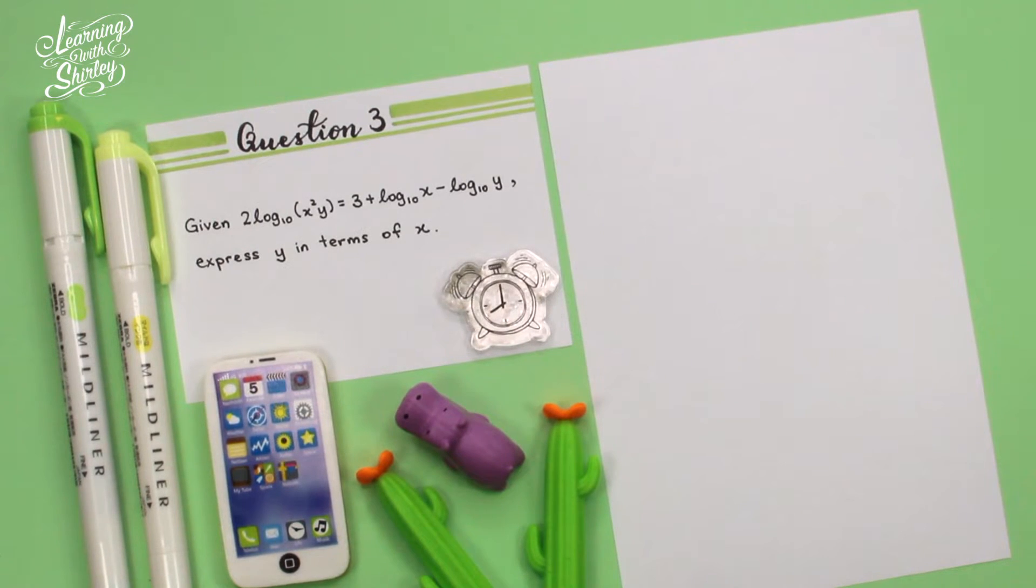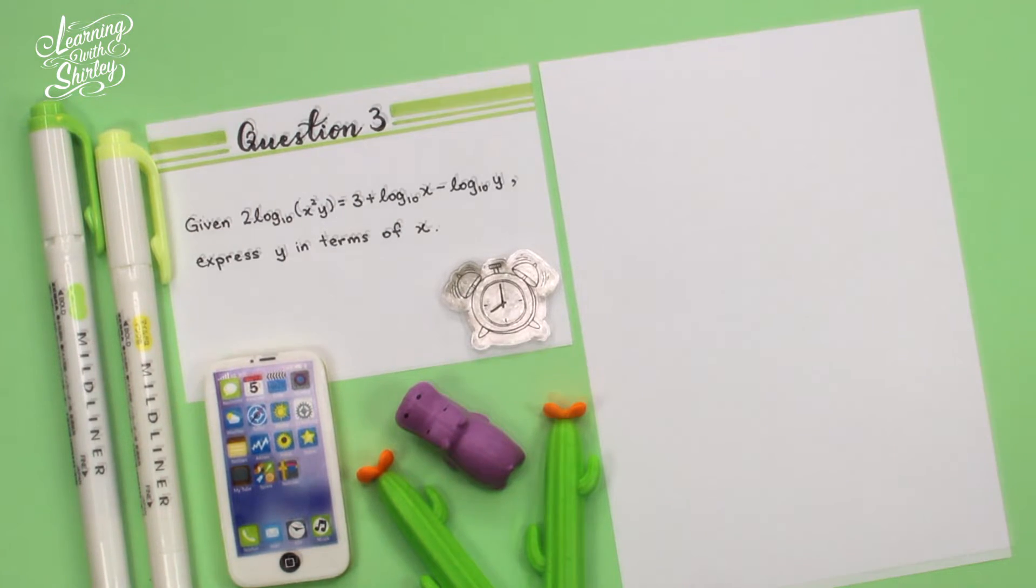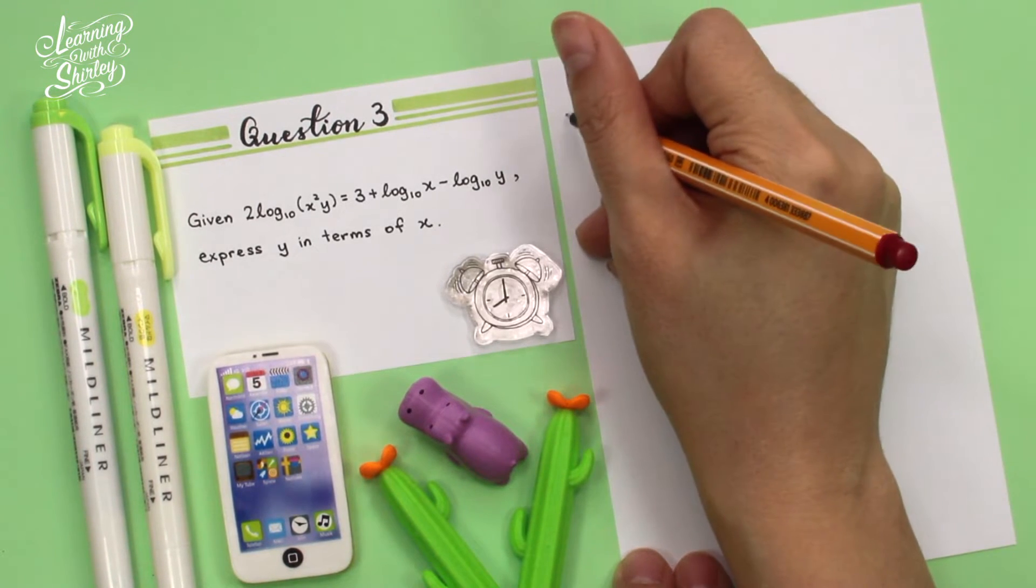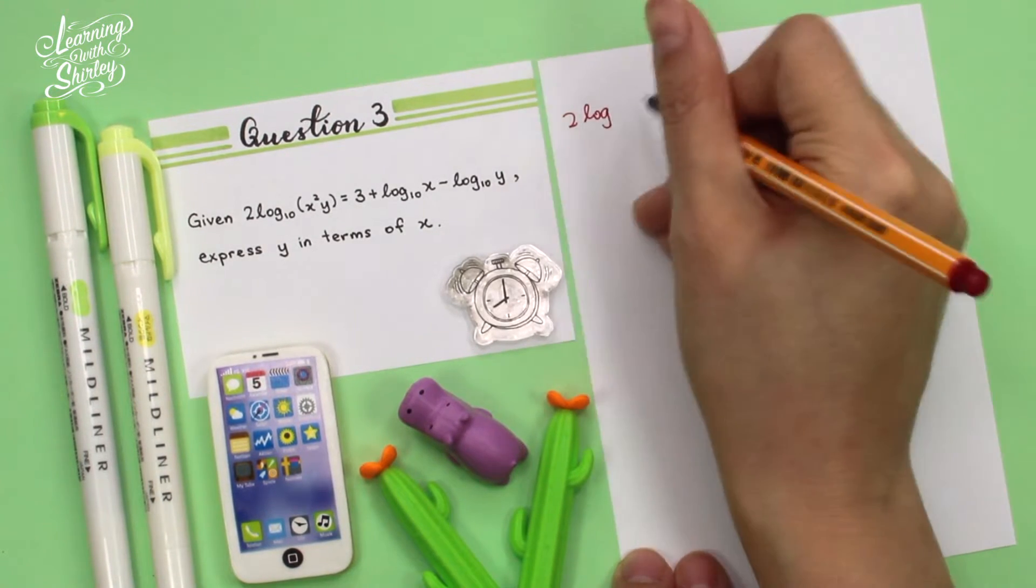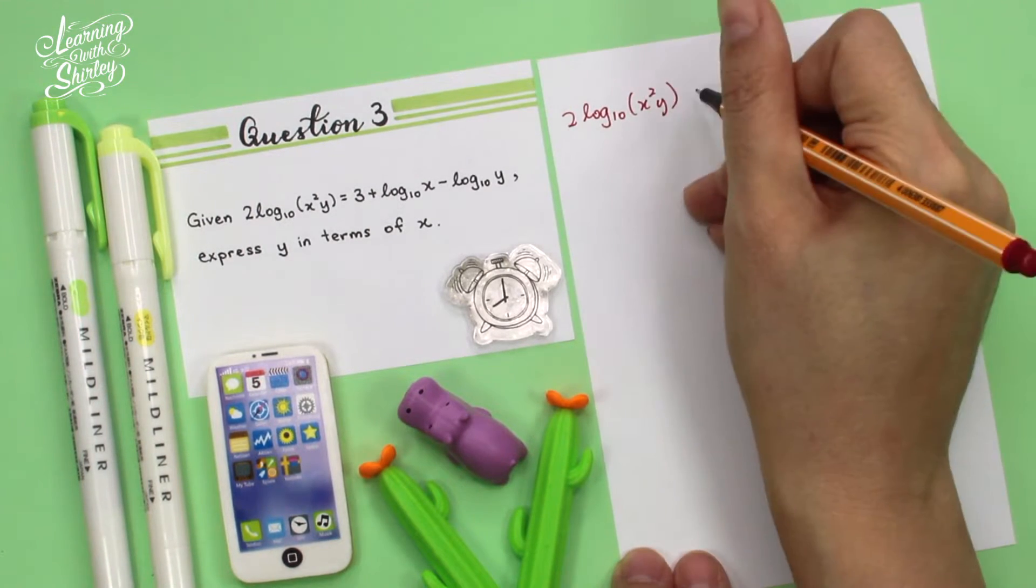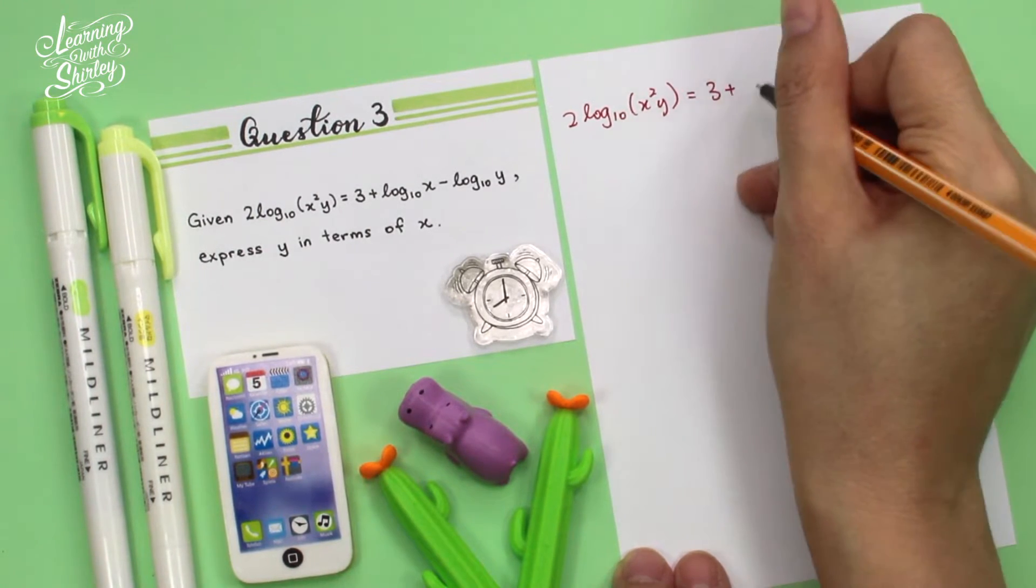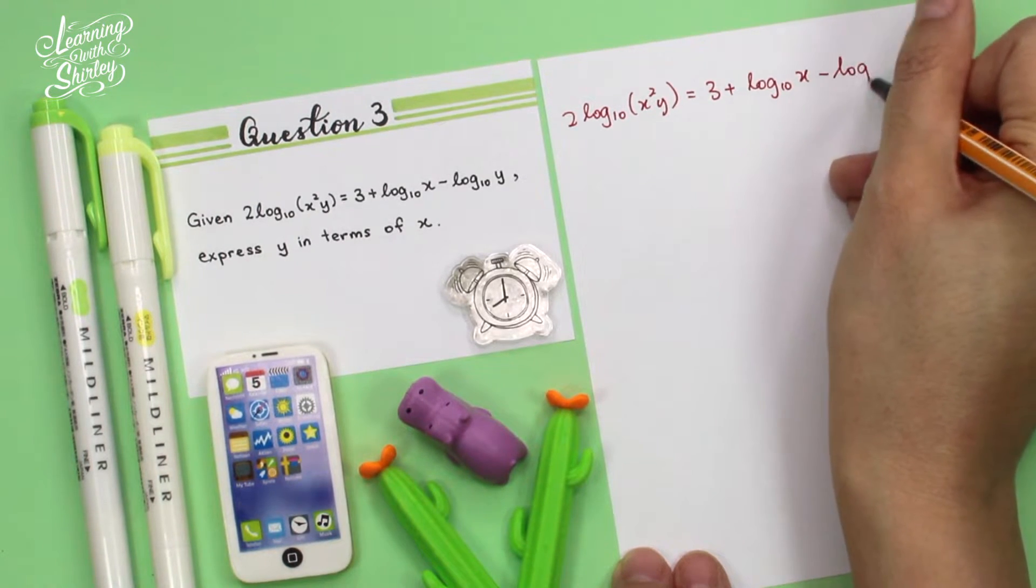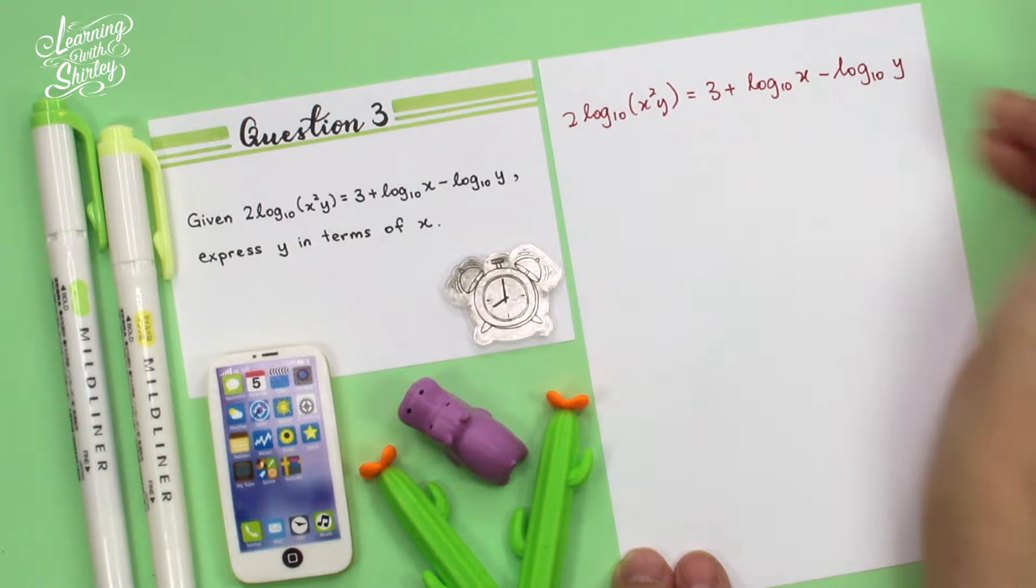For question 3, given 2 log base 10 of (x²y) equals 3 plus log base 10 of x minus log base 10 of y, express y in terms of x. First of all, I'm going to write down the question first, which is 2 log (x²y) equals 3 plus log x minus log y.